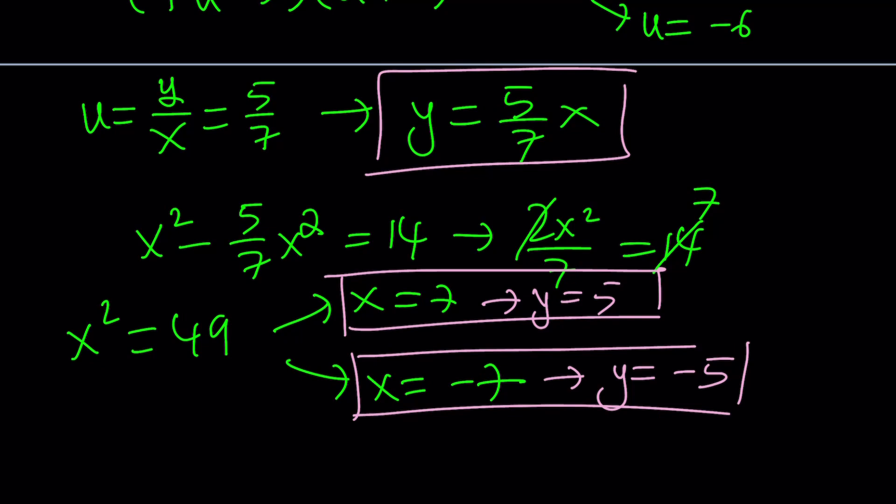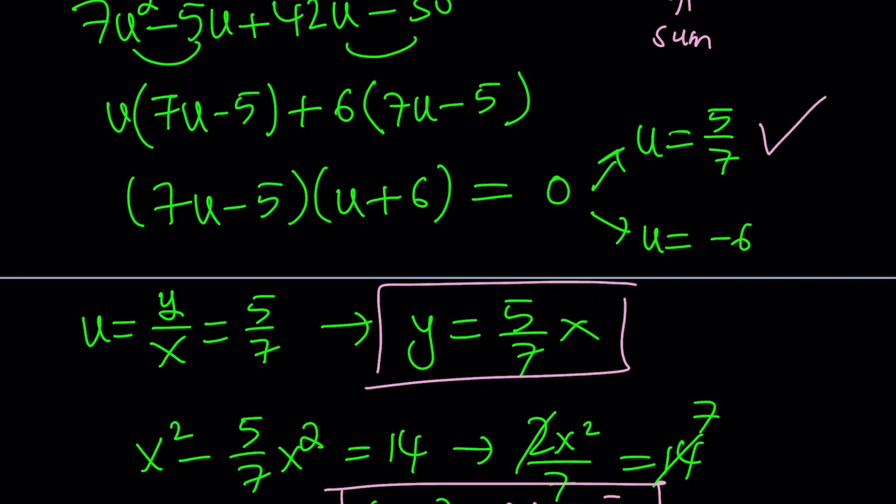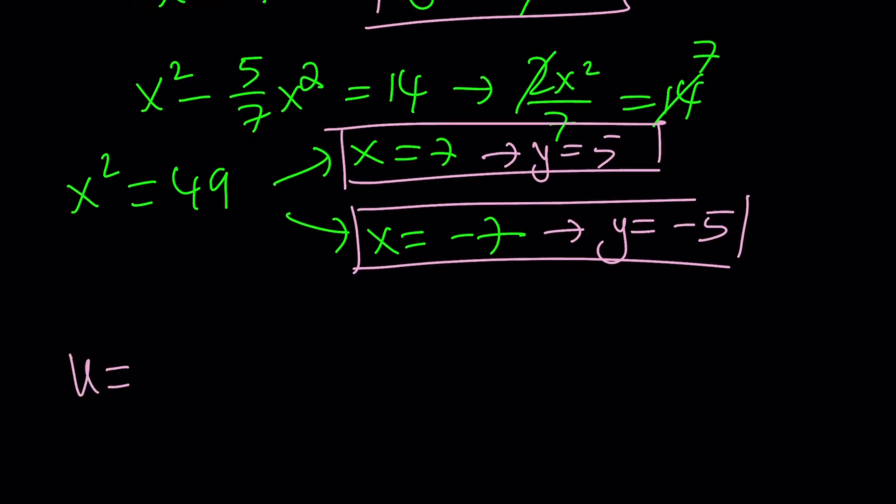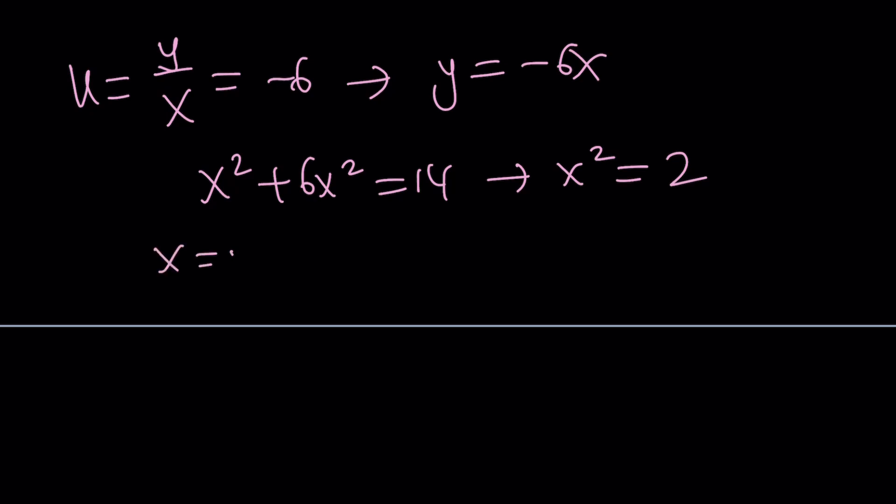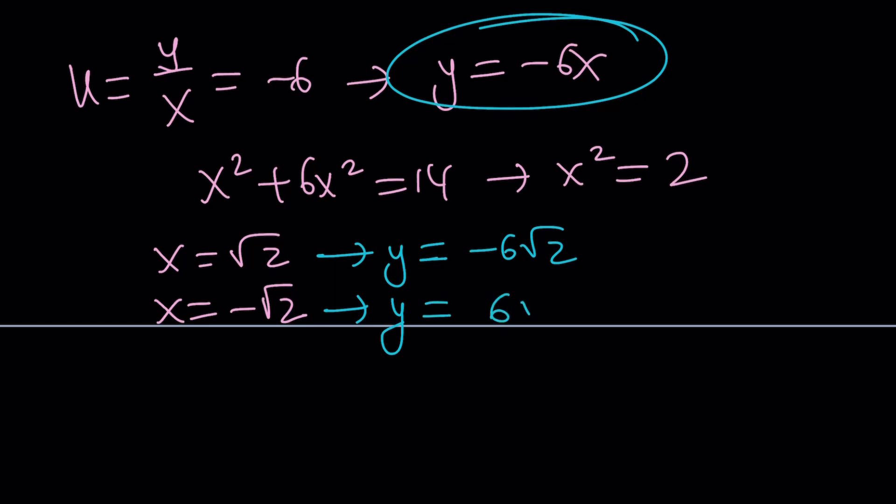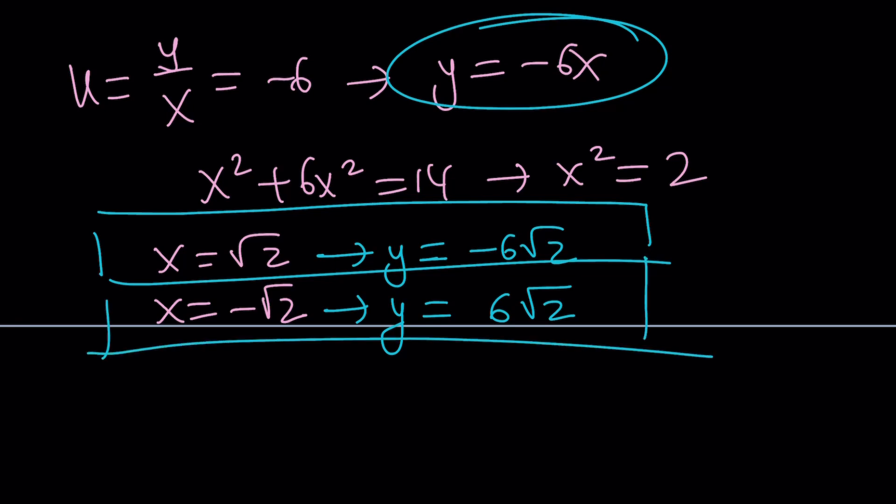Are those the only solutions? No, because we have another u value that we haven't used yet, which is u equals negative 6. So if u, which is y over x, is equal to negative 6, then from here we get y equals negative 6x. And if we plug it into the first equation, x squared minus xy plus 6x squared equals 14. 7x squared equals 14 gives us x squared equals 2. From here we get two solutions: x equals root 2 and x equals negative root 2. But you've got to be careful because y this time is negative 6 times x. So y is going to be negative 6 root 2 if x is root 2. And if x is the opposite, then y is going to be positive 6 root 2. That gives us two ordered pairs, which means we have a total of four solutions.